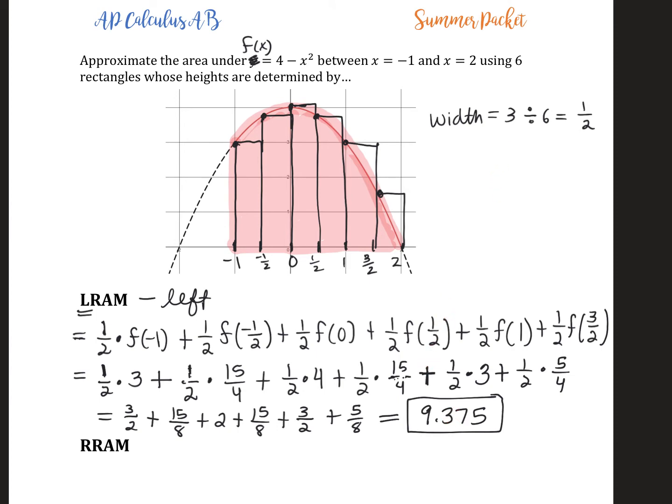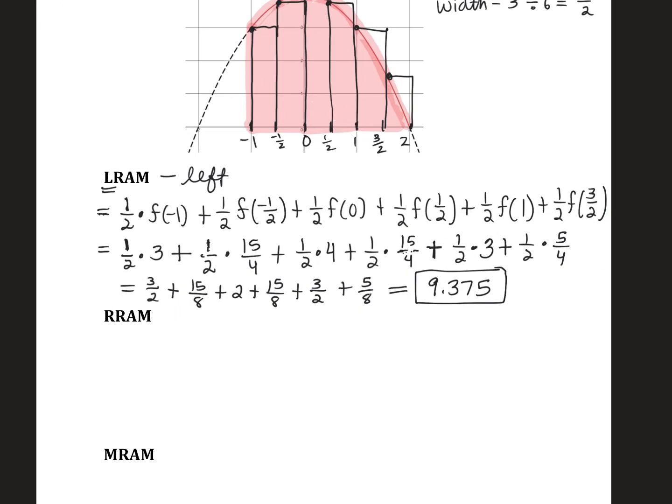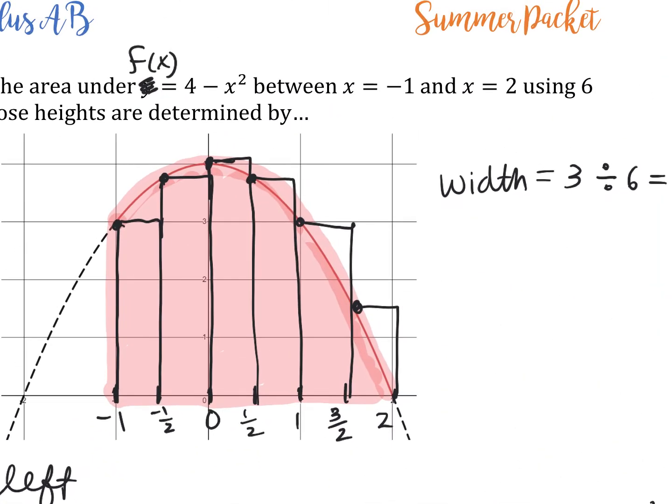Now with RRAM—right-hand rectangle approximations—the heights are determined from the right endpoints instead of left endpoints. I'll draw these in green. The first rectangle is here, the second there, the third here, fourth here, fifth here. The sixth rectangle doesn't exist because at x equals 2, the y value is 0.